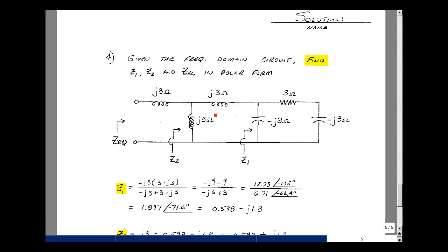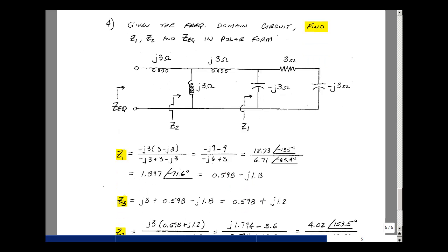That impedance is in series with j3 ohms, so I put it into rectangular form using my calculator — two inputs, real and imaginary output. Adding j3 to that gives an overall real part of 0.598 and imaginary part of plus j1.2. All of that is in parallel with j3, so I take the product over the sum again.